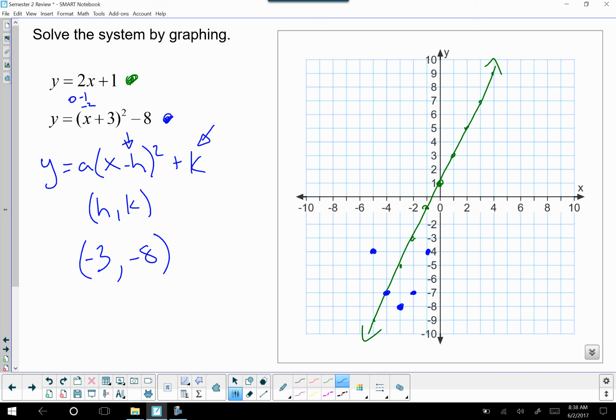Let's plug in 0. 0 plus 3 is 3, 3 squared is 9, 9 minus 8 is 1, so 0, 1, and negative 6, 1. Let's see if we can do one more. How about 1? 1 plus 3 is 4, 4 squared is 16, minus 8 is 8, so 1, 8, and negative 7, 8.